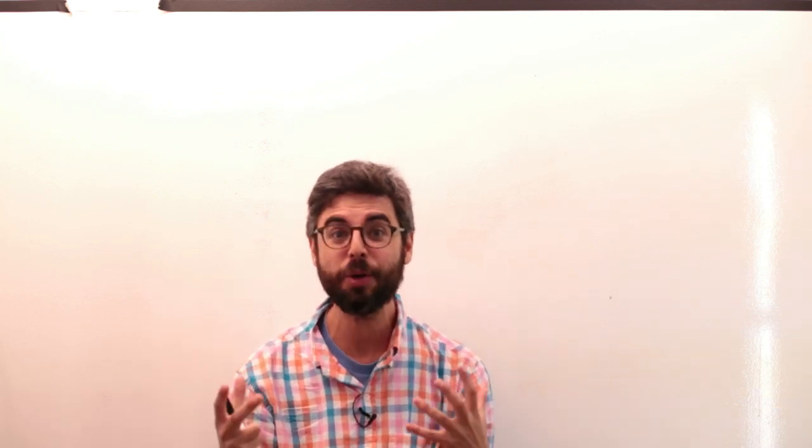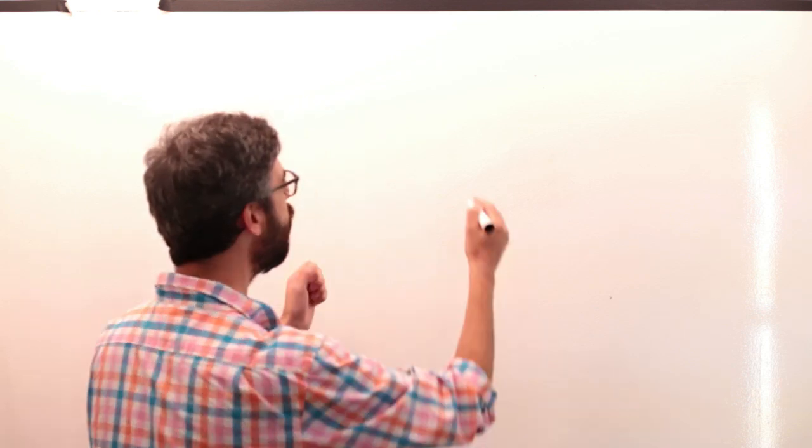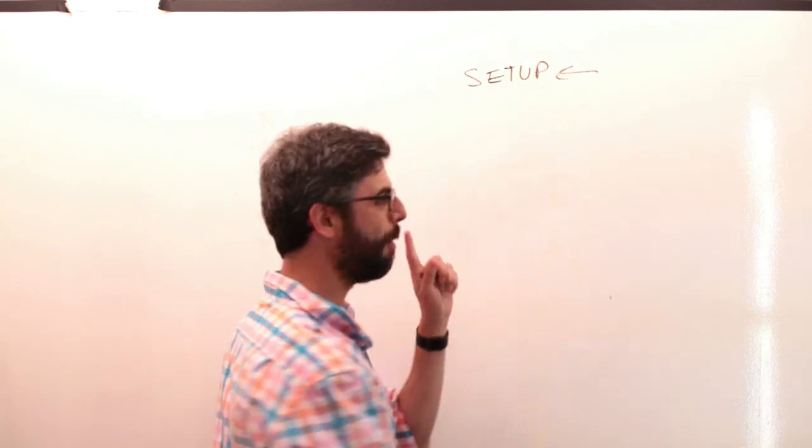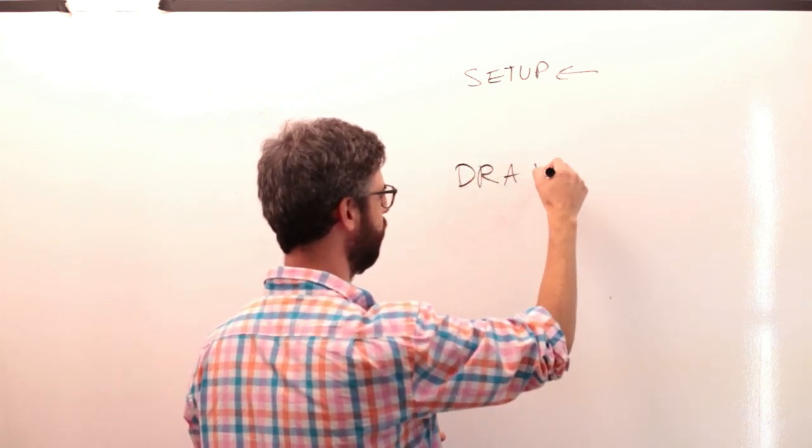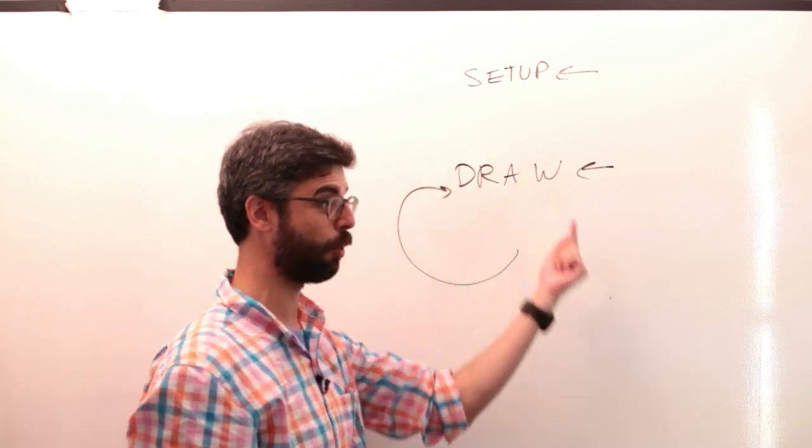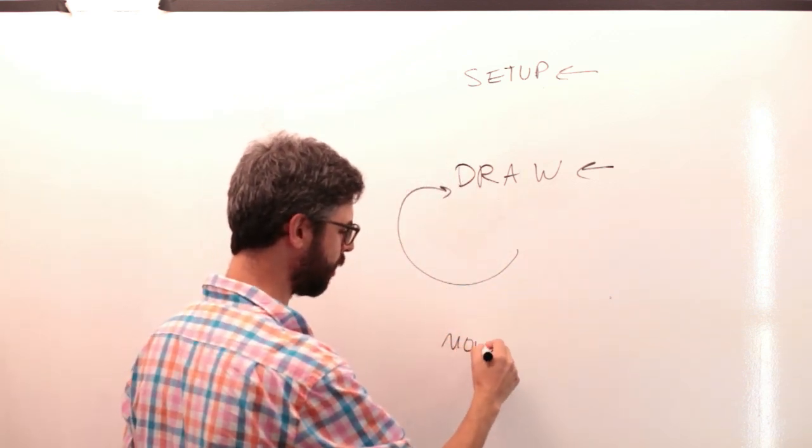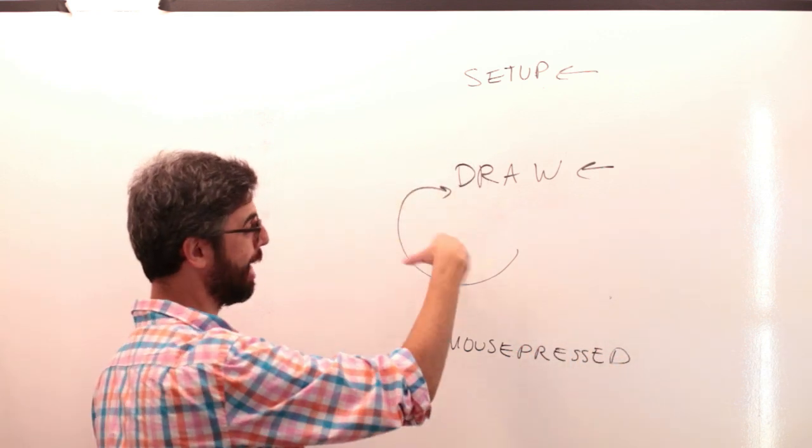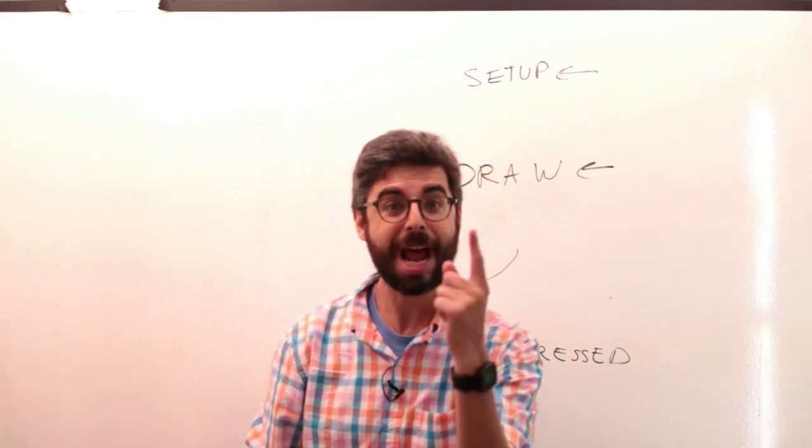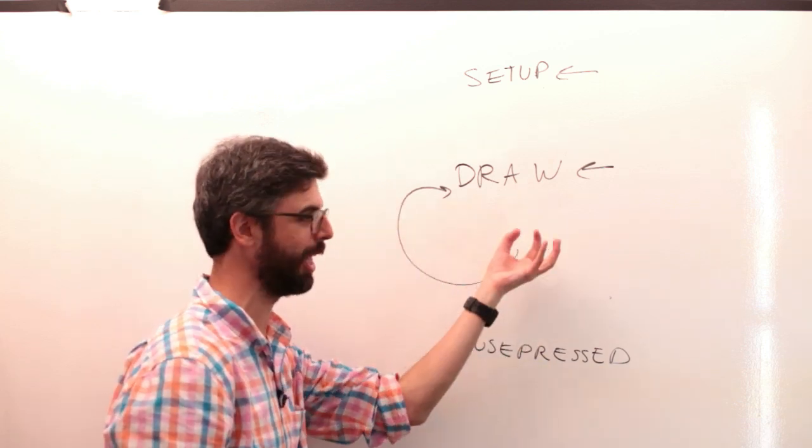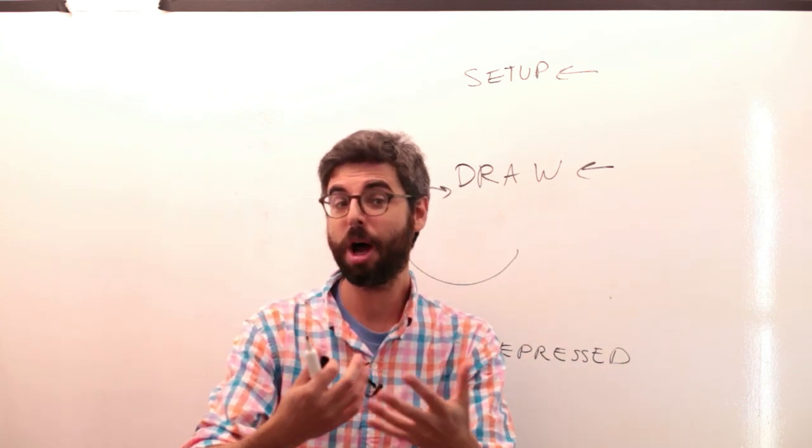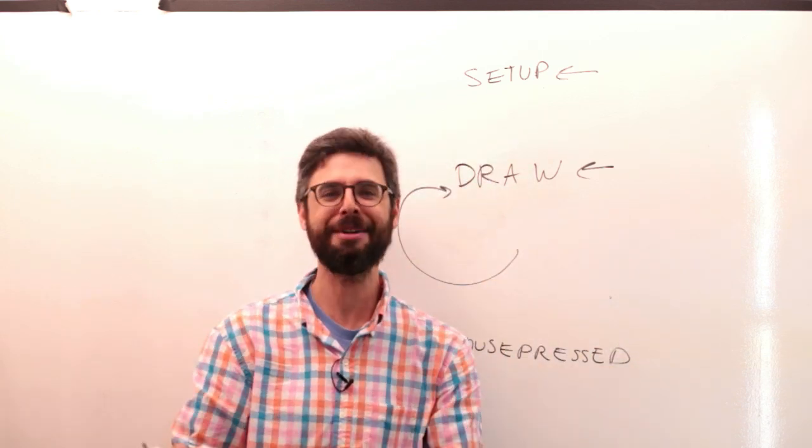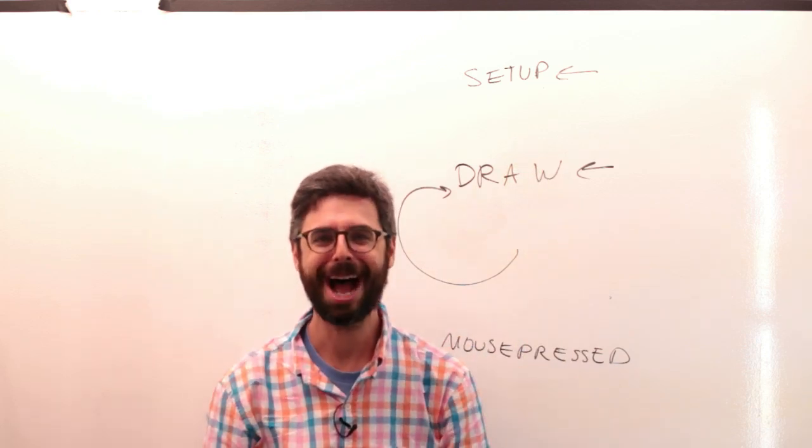In previous videos we worked with variables and how to store information that changes over time. Now we think about a new question - how can a program take different paths? The only path we have right now is starting in setup, that's the first thing that happens, moving on to draw and looping over and over again. We saw event functions like mouse pressed. But how can the code execute differently each time through draw? One time through draw it might draw a purple circle and the next time a pink circle. This will be the first example in this video.